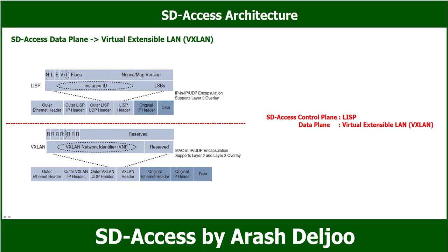VXLAN is used in the data plane because it is capable of encapsulating the original Ethernet header to perform MAC-in-IP encapsulation, while LISP cannot. The most important difference between LISP and VXLAN in the data plane is that LISP can encapsulate packets, while VXLAN can encapsulate frames — meaning VXLAN supports both Layer 2 and Layer 3 connectivity. Using VXLAN allows an SD Access fabric to support Layer 2 and Layer 3 virtual topologies with built-in network segmentation via VRF instances and group-based policies.